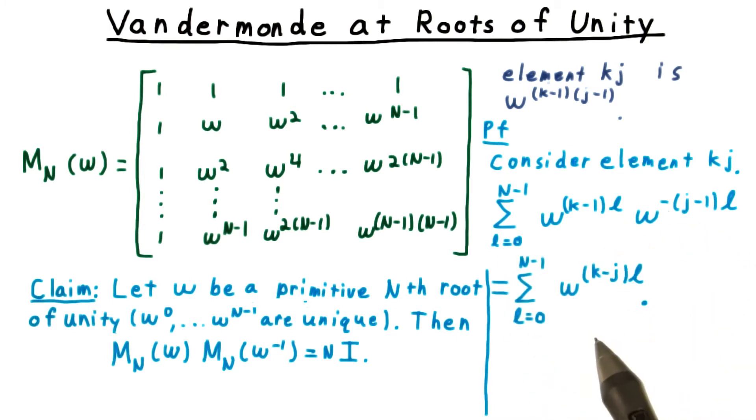Gathering terms from the exponent, this becomes the sum over l of omega to the k minus j times l-th power.